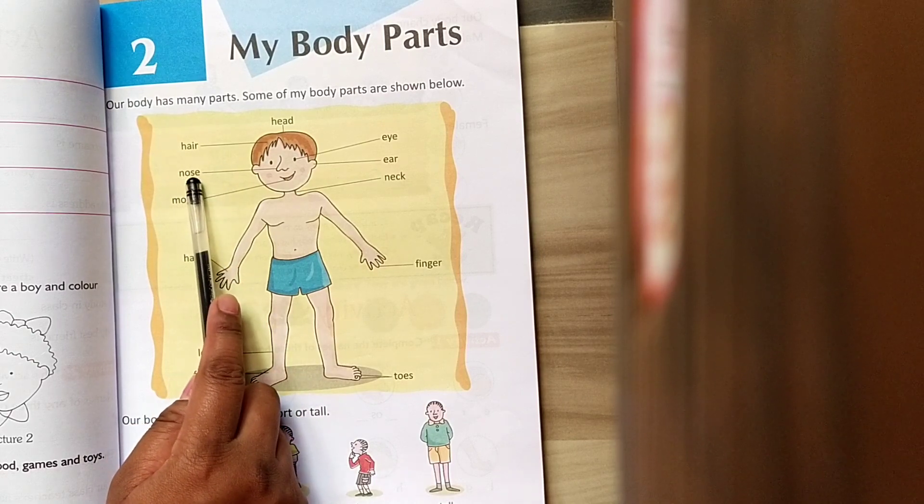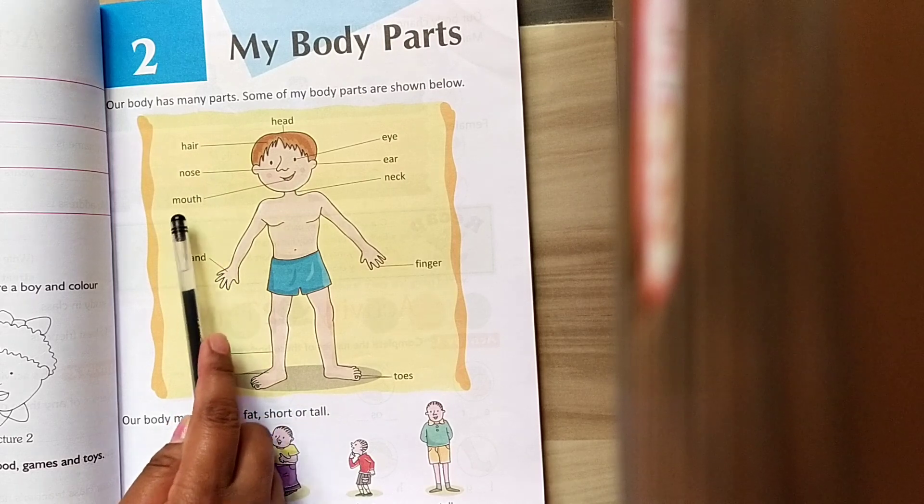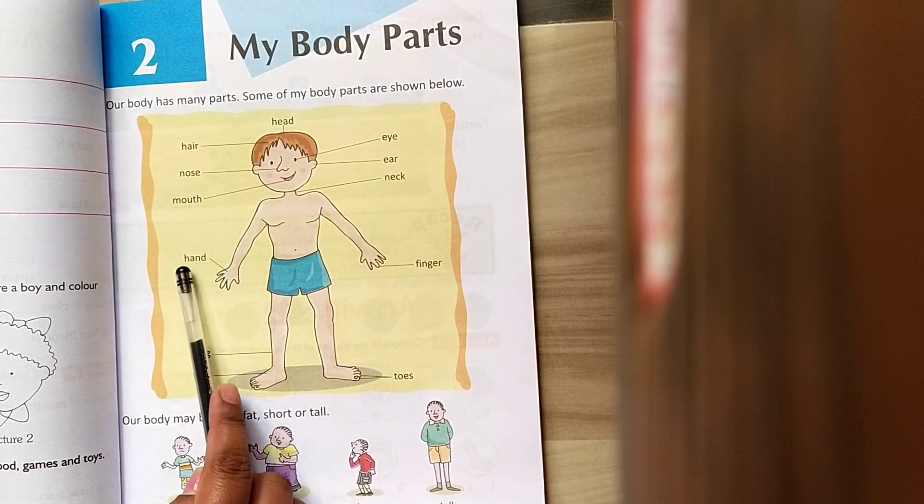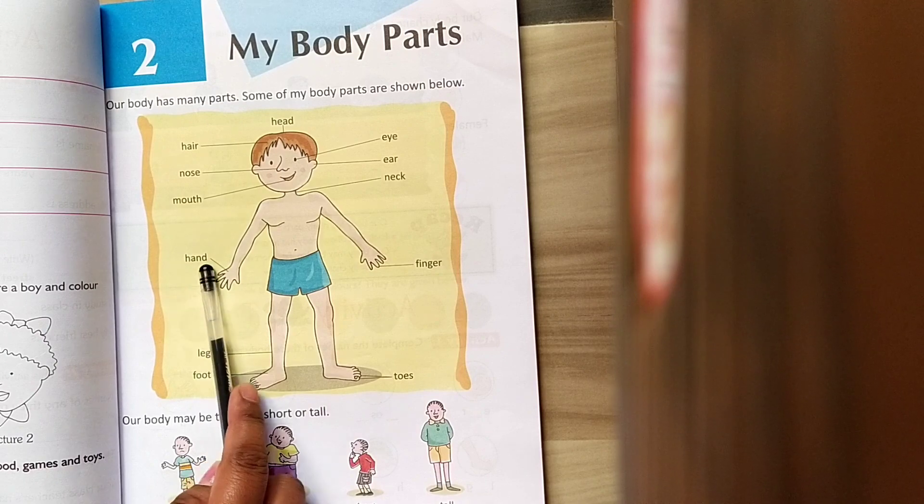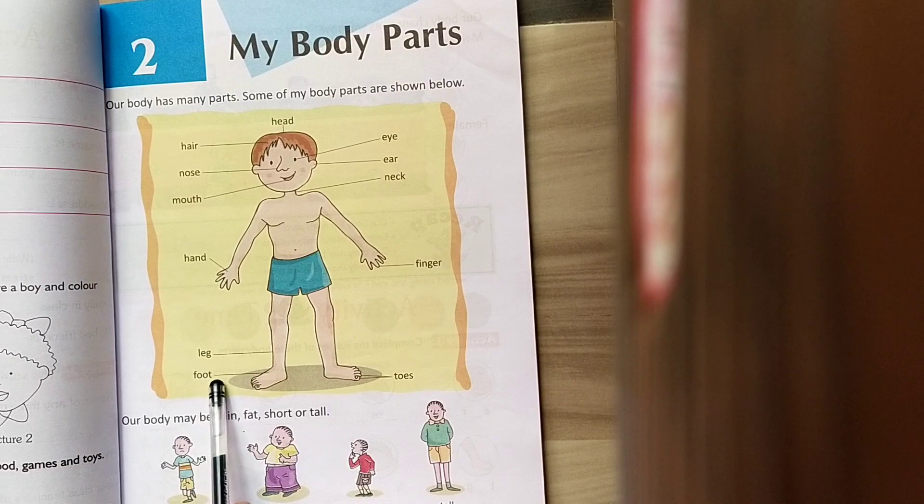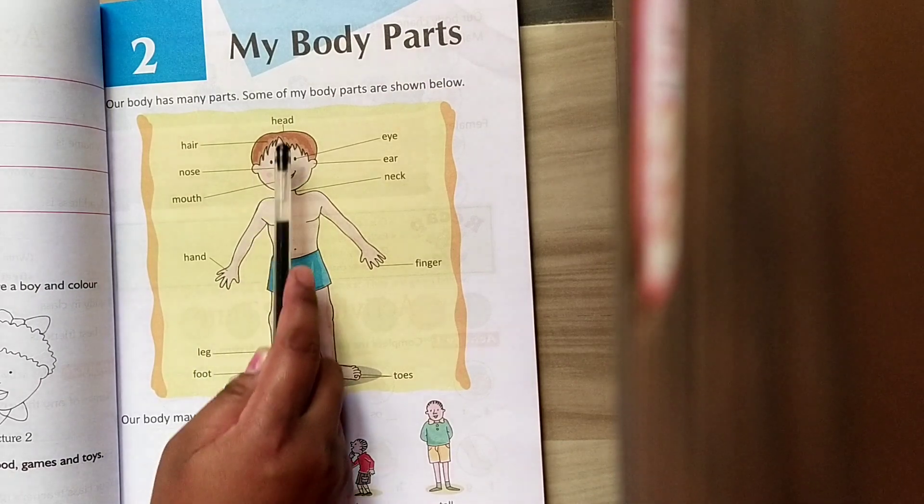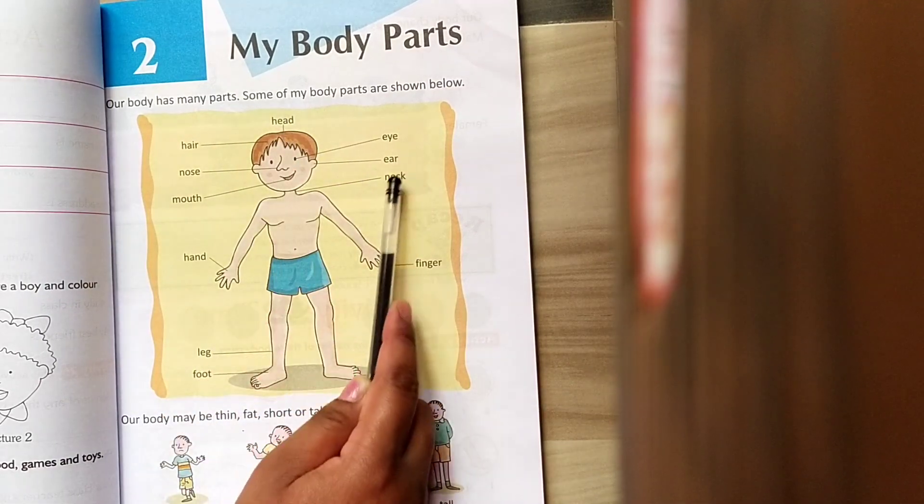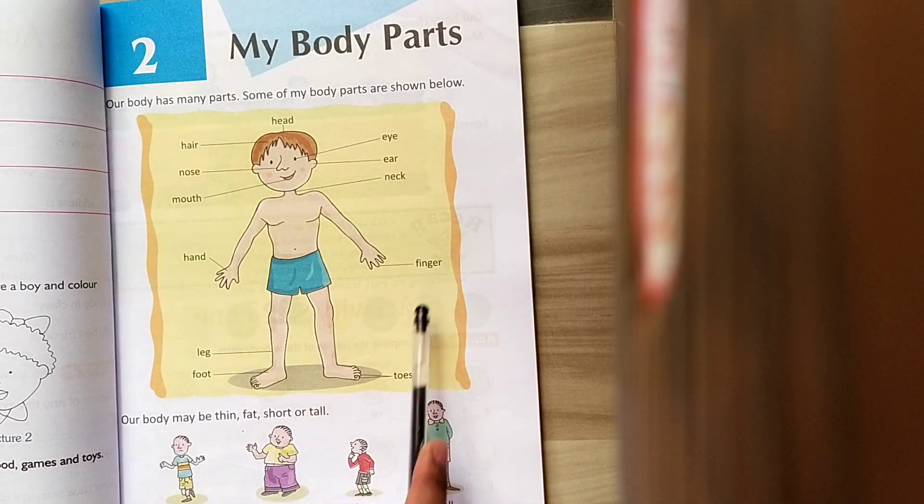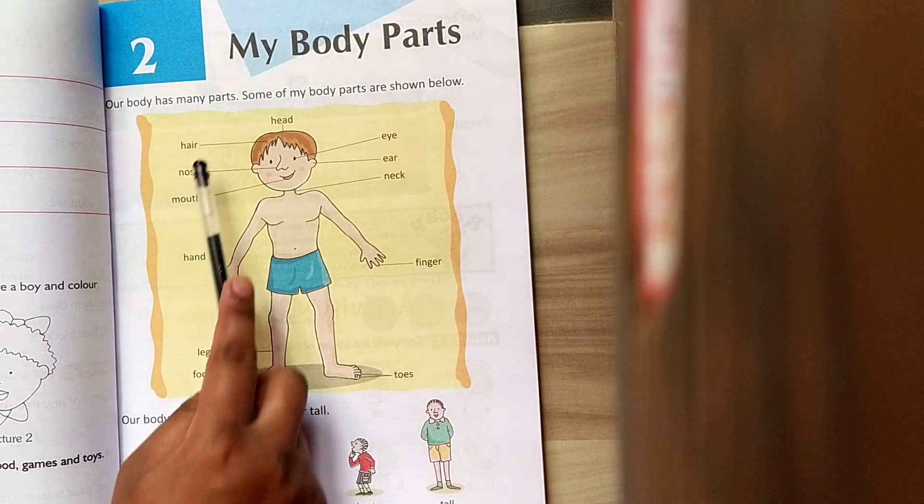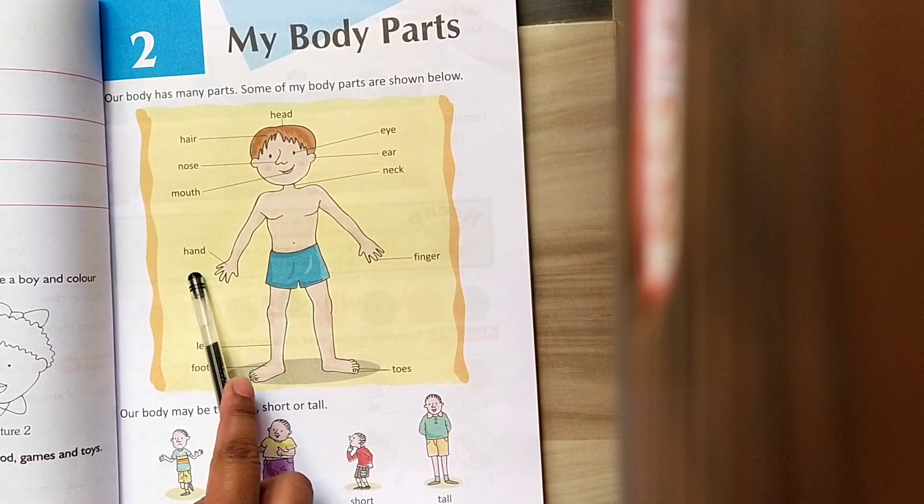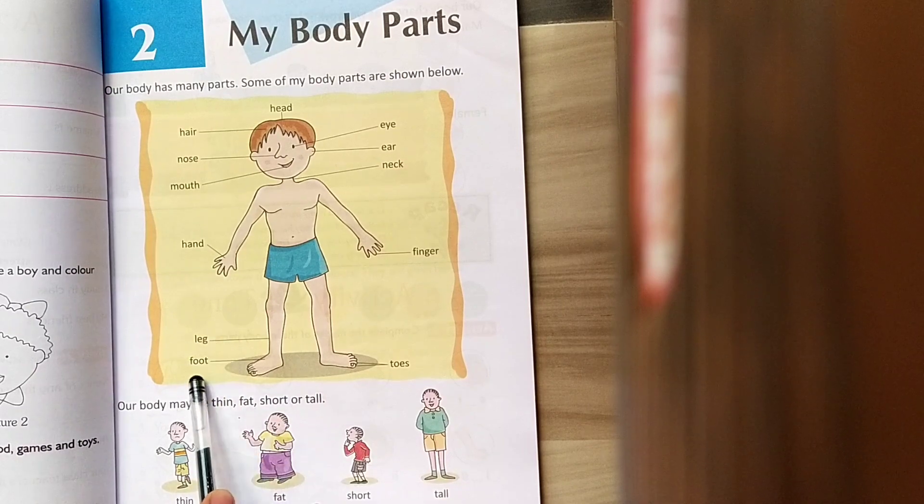N-O-S-E, Nose, M-O-U-T-H, Mouth, H-A-N-D, Hand, L-E-G, Leg, F-O-O-T, Foot. Head, Eye, Ear, Neck, Finger, Toes, Hair, Nose, Mouth, Hand, Leg, Foot.